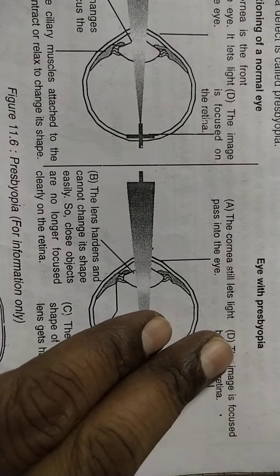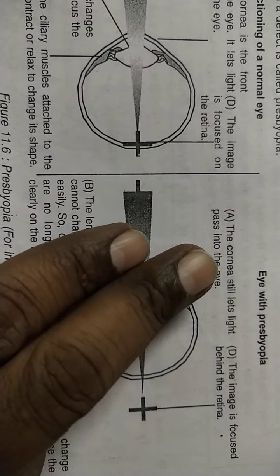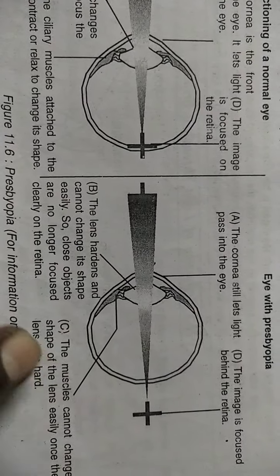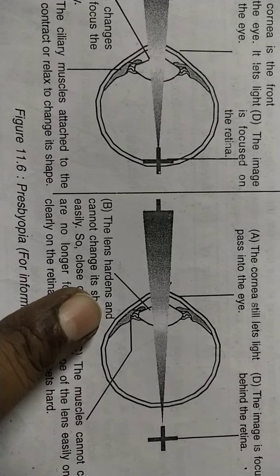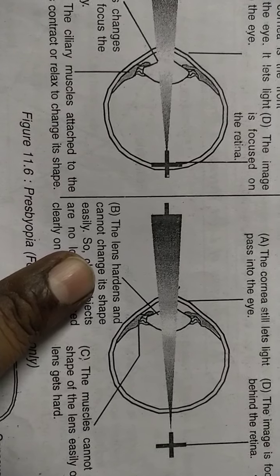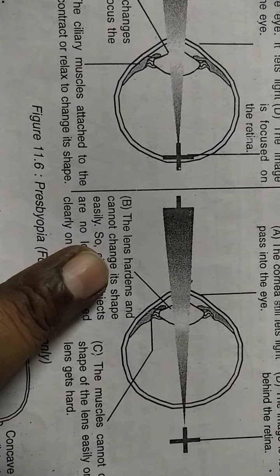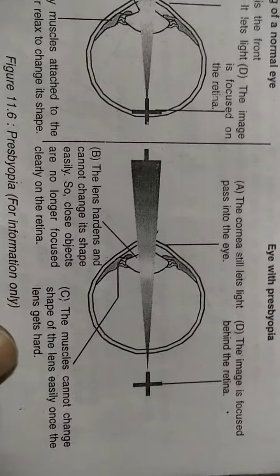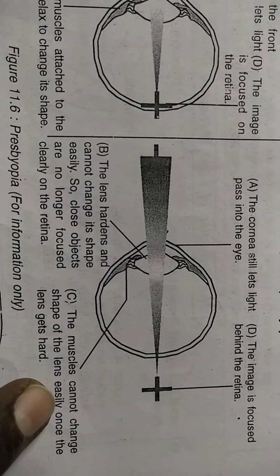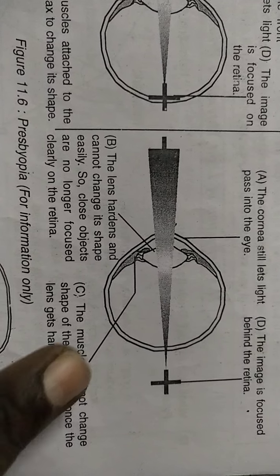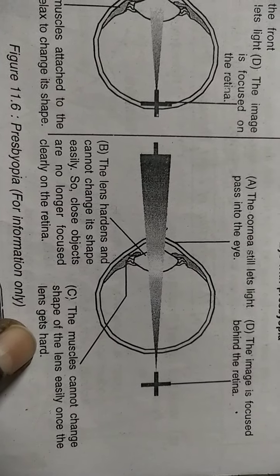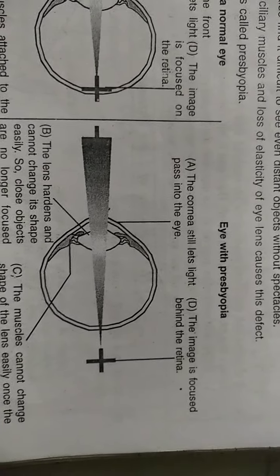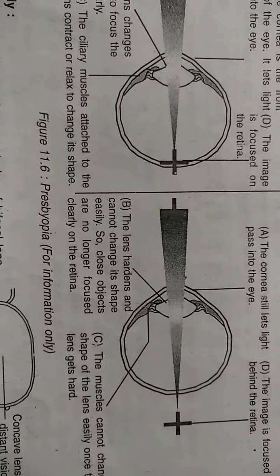Now, with presbyopia, what happens: (a) The cornea still lets light pass into the eye. (b) The lens hardens and cannot change its shape — it is no longer elastic, so nearby objects are not focused clearly on the retina. (c) The ciliary muscles are also weak, so they cannot change the shape of the lens easily. (d) The image is focused behind the retina and we cannot see the object clearly.